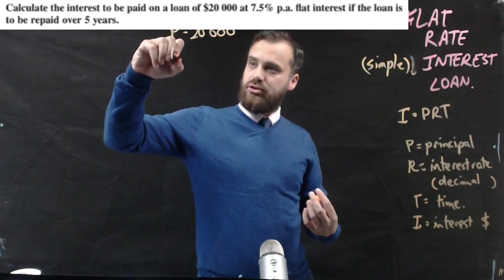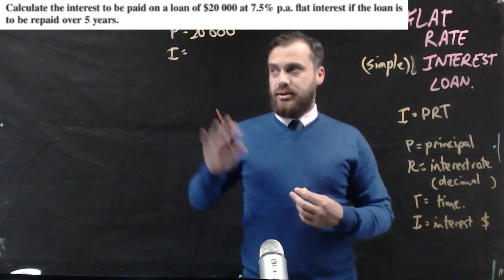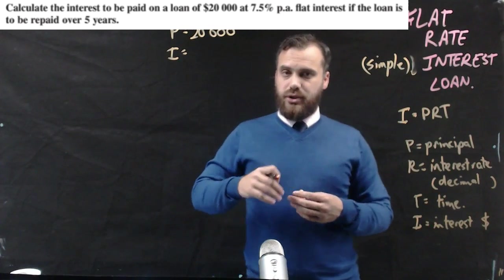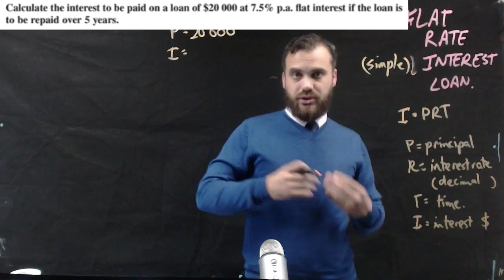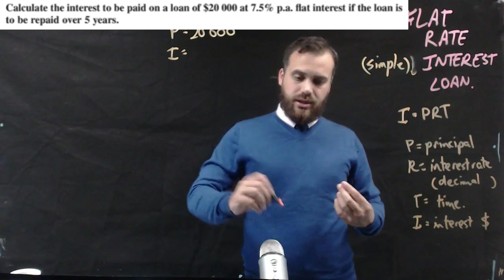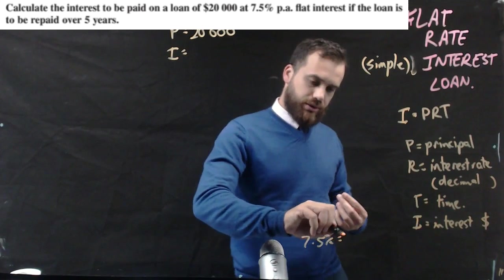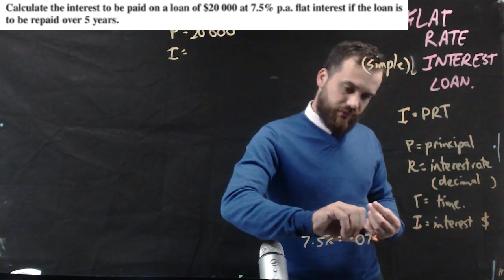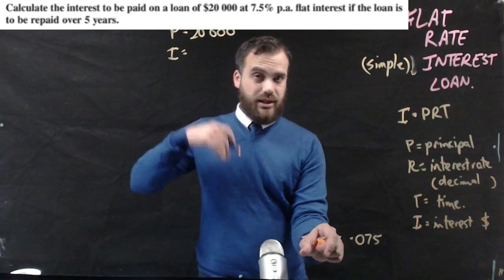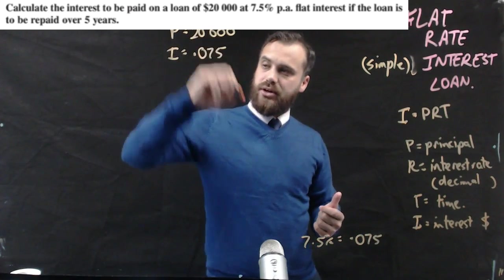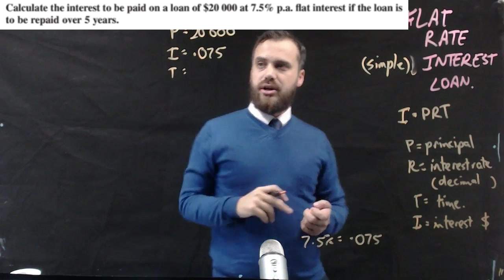It means the interest is in the question it's 7.5 percent. But remember to convert a percentage to a decimal you divide it by a hundred. So 7.5 percent is going to be equal to 0.075. You can just put that into your calculator and divide it by a hundred. Simple.